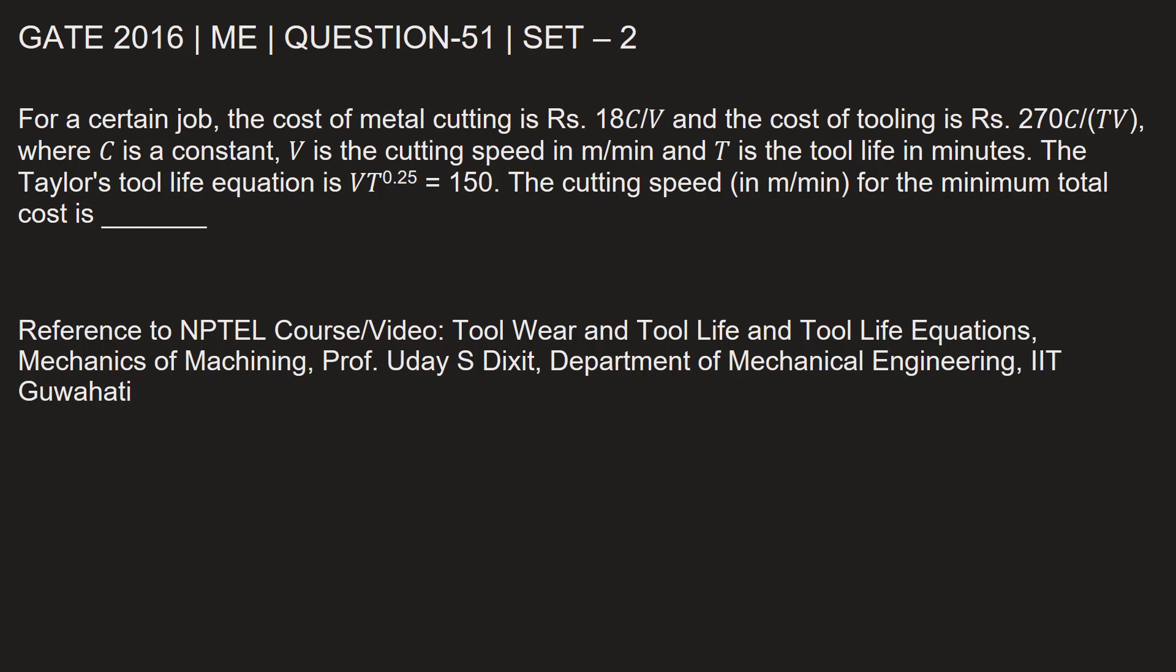This question is from GATE 2016 Mechanical Engineering paper, Set 2, Question 51. For a certain job, the cost of metal cutting is Rs. 18C/V and the cost of tooling is Rs. 270C/(TV), where C is a constant, V is the cutting speed in meters per minute, and T is the tool life in minutes. The Taylor's tool life equation is VT^0.25 = 150.